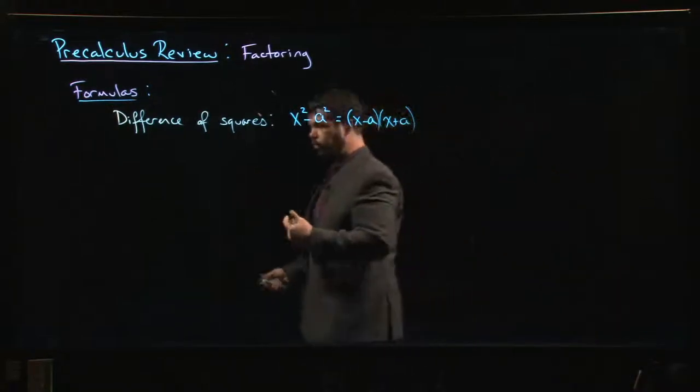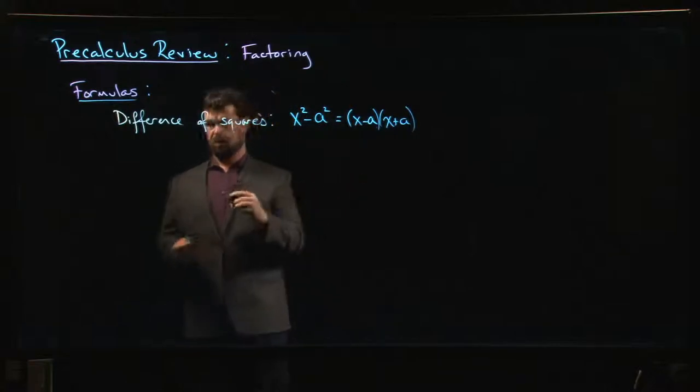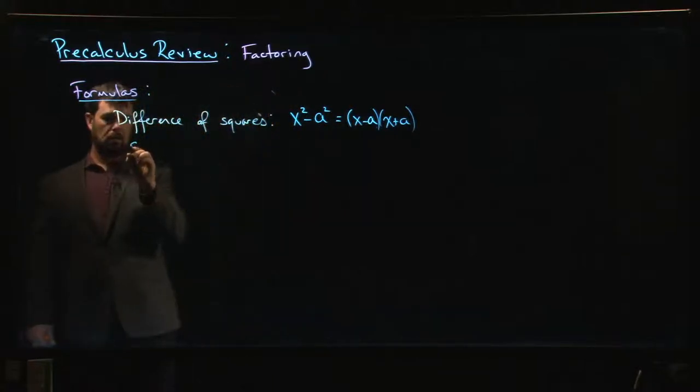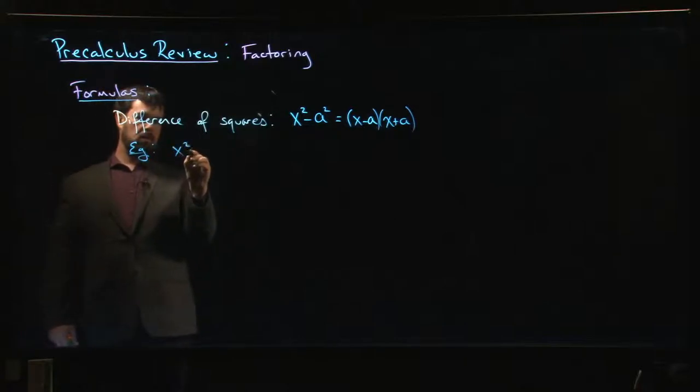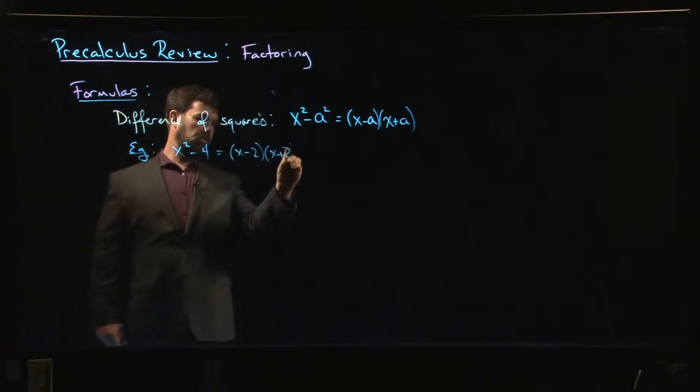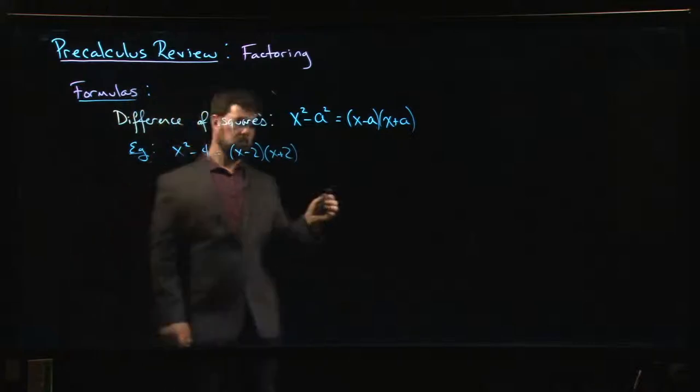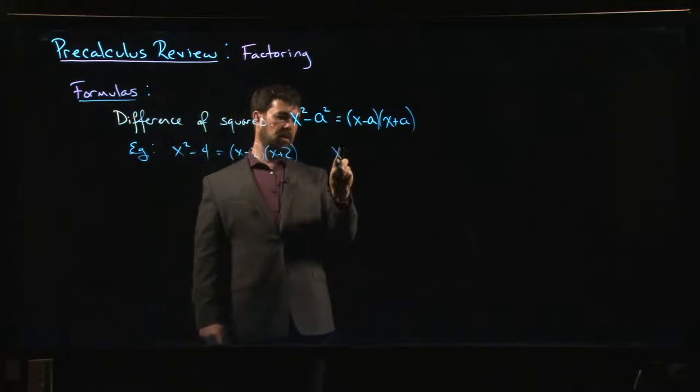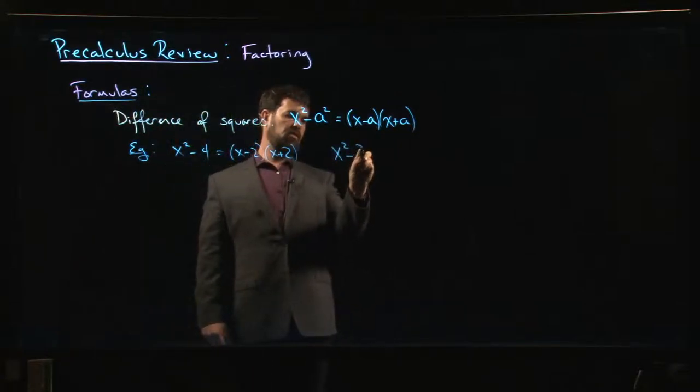Difference of squares comes up fairly often, sometimes just simply in factoring. For example, somebody gives you x squared minus 4 and you say oh yeah I know what that is, it's x minus 2 times x plus 2. Or maybe they give you something like x squared minus 3.